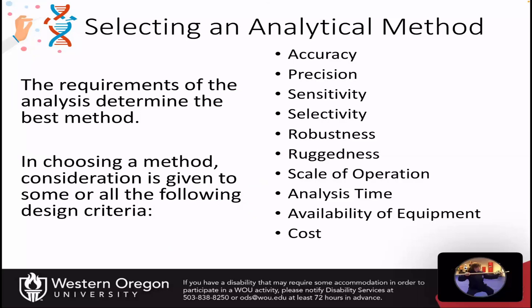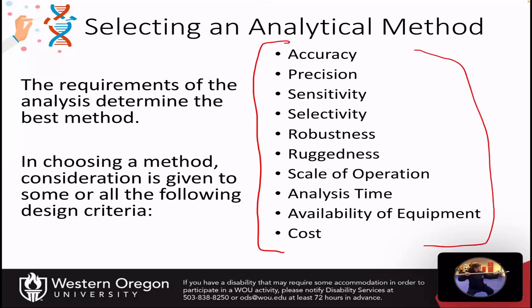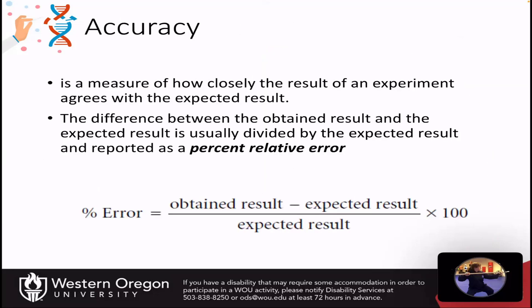So we have our absolute and relative concentrations, and now we need to think about the different components that can shape or alter our analytical methodology. We need to think about accuracy and precision, the sensitivity of the method, the selectivity for our analytes, how robust and rugged it is, what's the scale of the operation — do we need gram levels or very small concentrations — and then how much time it takes, whether we have the equipment, and what the cost is. These are all design criteria questions, so let's take a deeper look at each component.